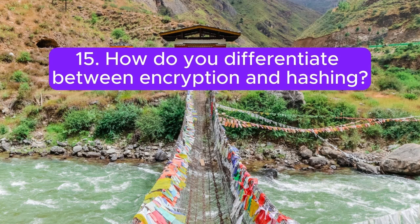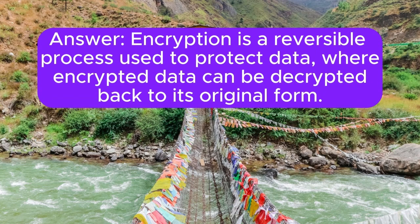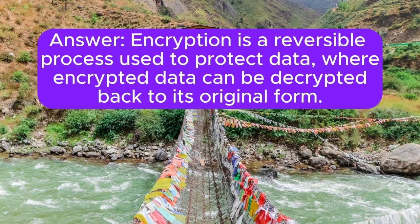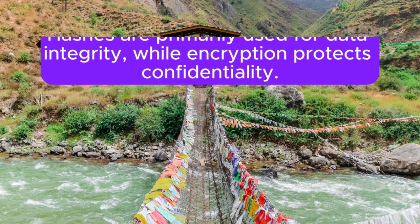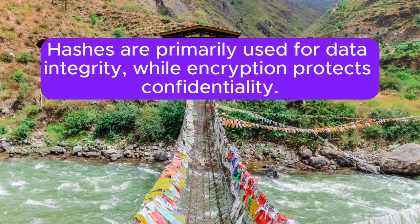15. How do you differentiate between encryption and hashing? Encryption is a reversible process used to protect data, where encrypted data can be decrypted back to its original form. Hashing is a one-way function that converts data into a fixed-length string of characters which cannot be reversed. Hashes are primarily used for data integrity, while encryption protects confidentiality.